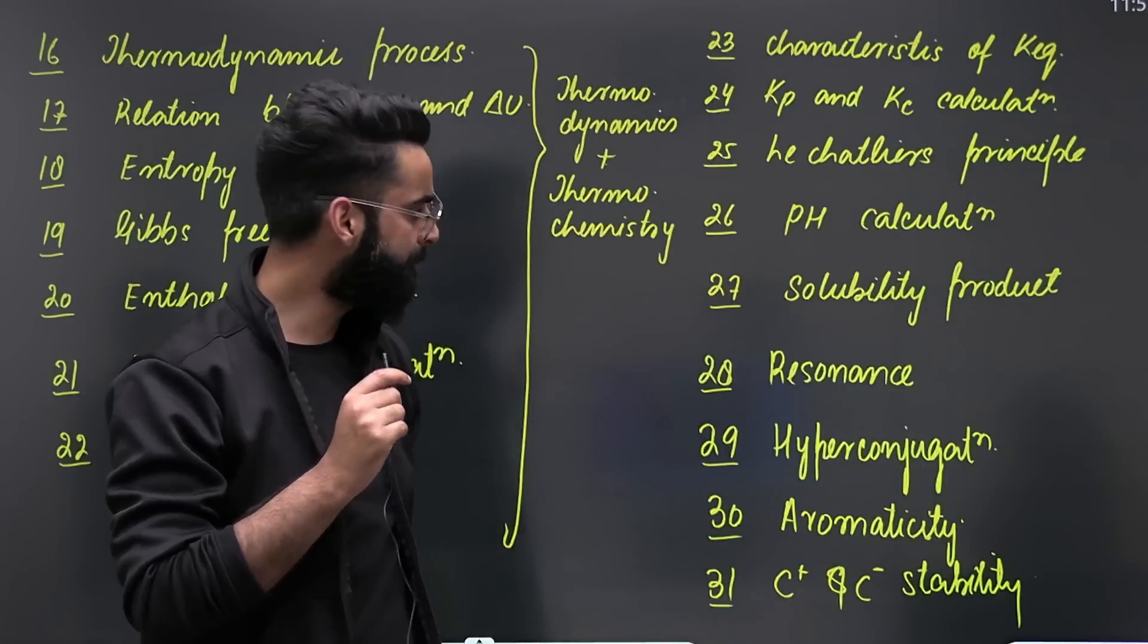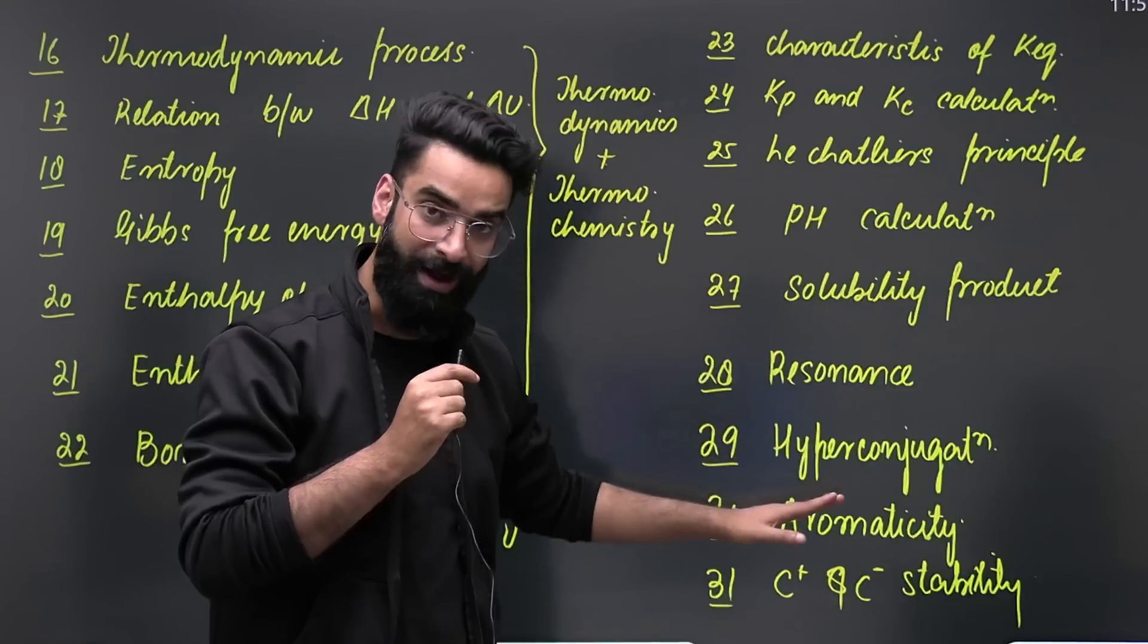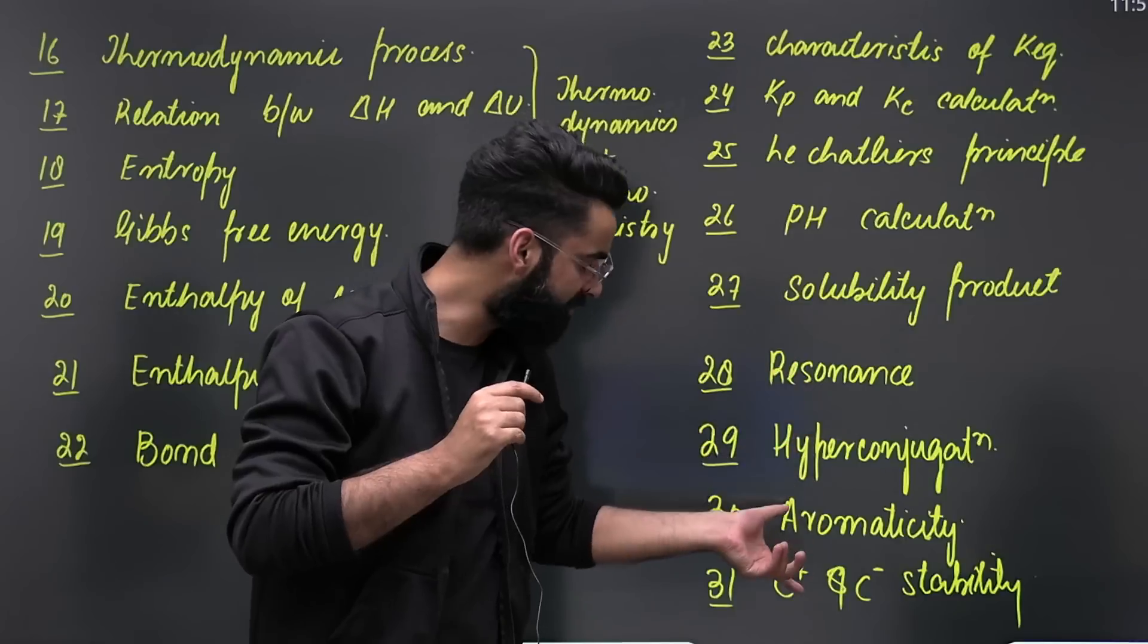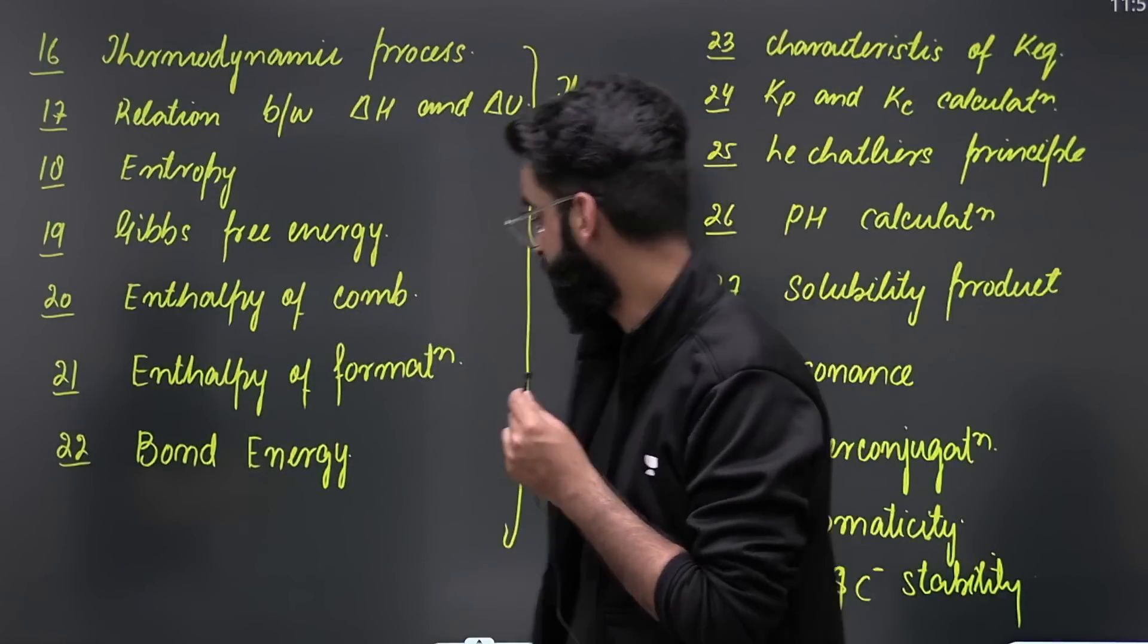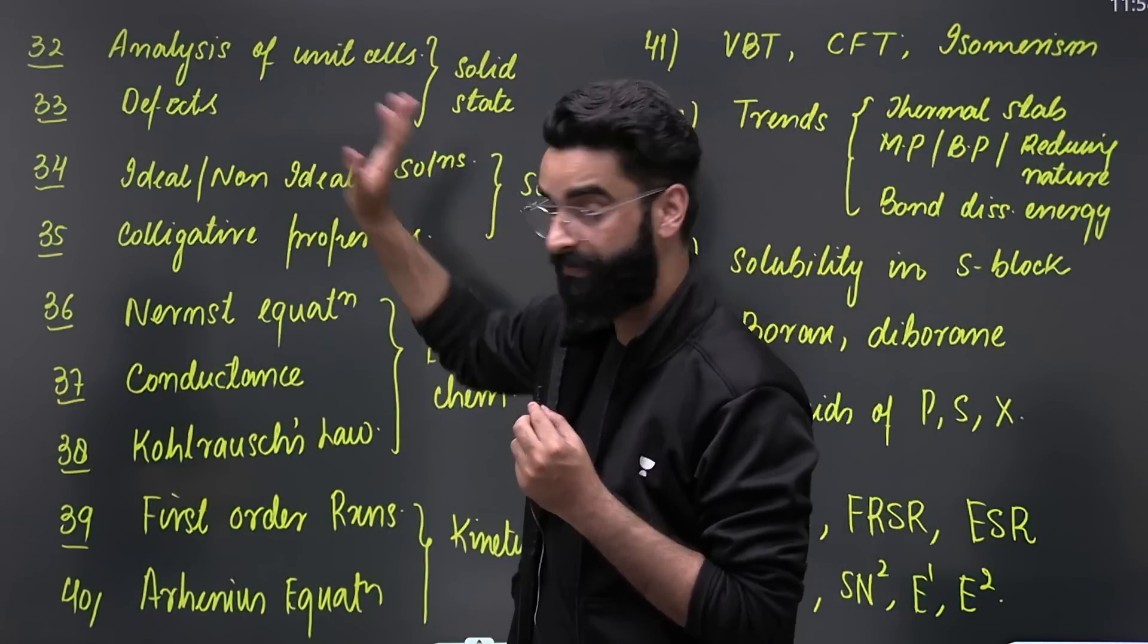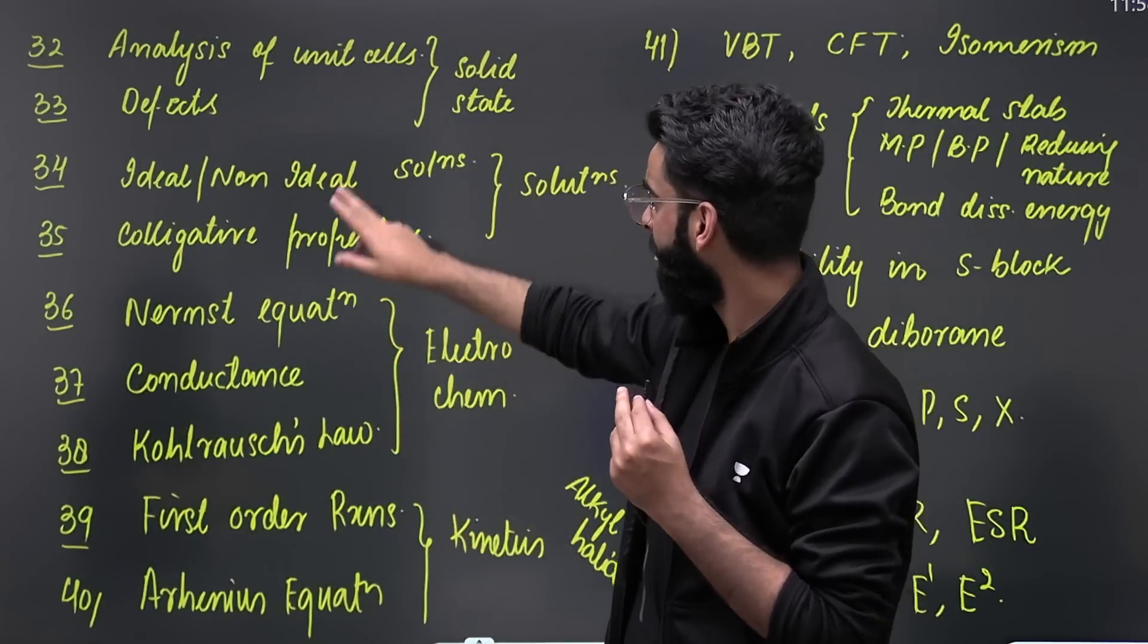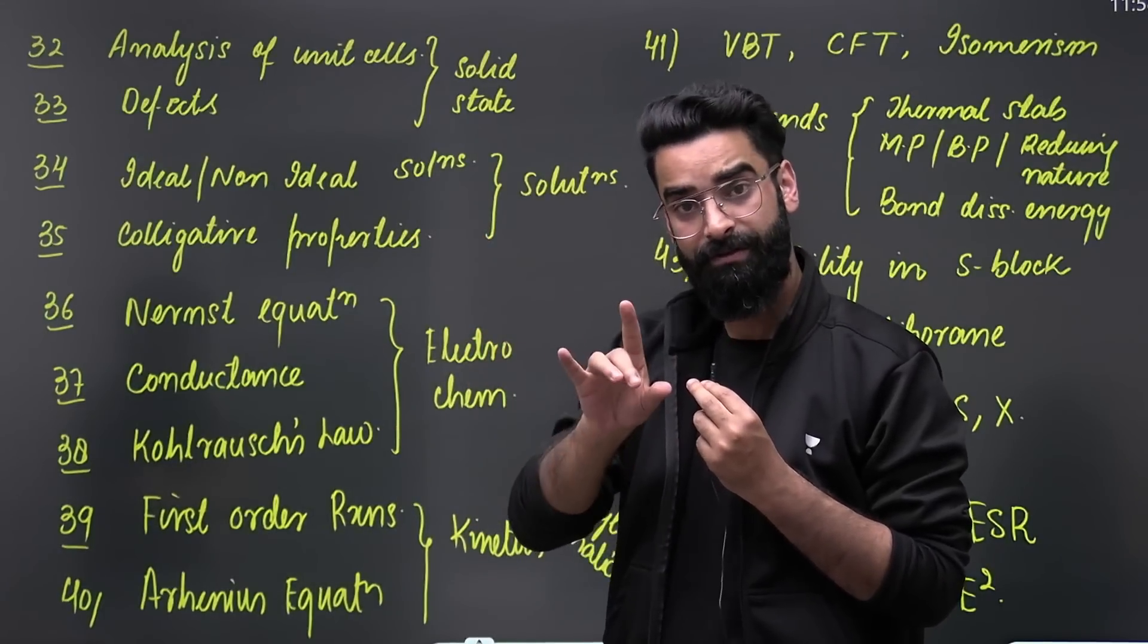Talking about your general organic chemistry: resonance, hyperconjugation, aromaticity, carbocation, and carbanion stability. These are some important topics which you need to focus on more as far as your general organic chemistry is concerned. Moving ahead to solid state, you have got two topics: analysis of unit cells and defects. Just these two topics.